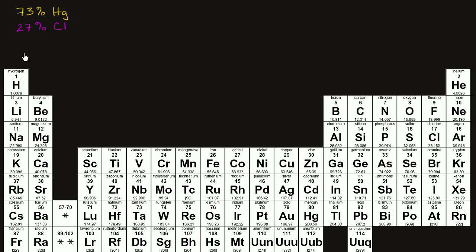So let me make it clear that I'm assuming this. I'm going to assume that I have 100 grams of this molecule that is 73% mercury and 27% chlorine.